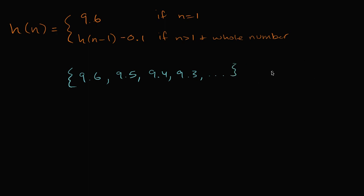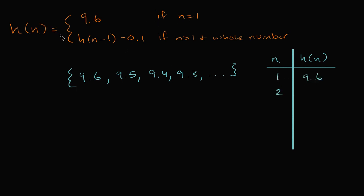Let's make a little table with n and h of n. When n equals one, h of n is 9.6. When n equals two, it's h of one minus 0.1, which is 9.6 minus 0.1, giving 9.5. When n equals three, it's h of two minus 0.1 — h of two is 9.5 — so you subtract a tenth and get 9.4. Exactly what we saw.